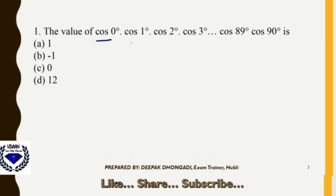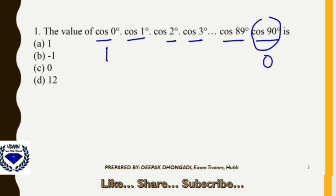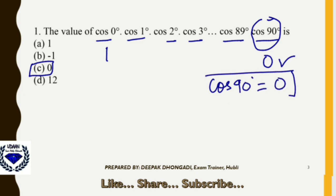Question 1: cos0° · cos1° · cos2° · cos3° · ... · cos89° · cos90° equals what? Whenever you get such a series, remember: cos0°=1, cos45°=1/√2, cos30°=√3/2, cos60°=1/2, and cos90°=0. Since this is a product and cos90°=0, multiplying anything by 0 gives 0. So the correct answer is option C, because cos90°=0 and 0 multiplied by any number is 0.